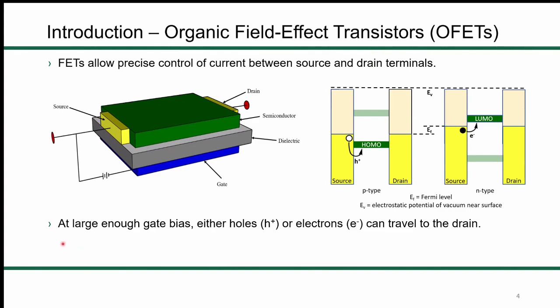You can design a molecule where everything looks good on paper, but when you try to deposit it, the solid-state packing could just be not conducive to charge transfer. For a basic scheme of how field-effect transistors work: they're three-terminal devices with source, drain, and gate terminals. A large enough gate bias can allow either holes or electrons to travel to the drain depending on the type of semiconductor — majority hole carriers are p-type, while majority electron carriers are n-type.